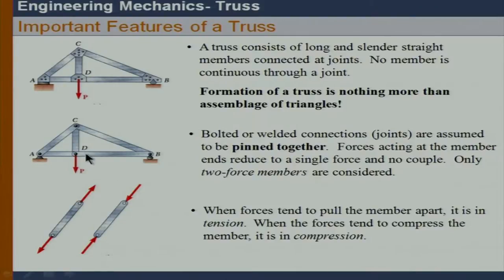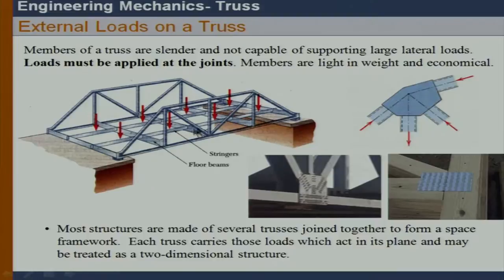Therefore, at the end — that is, at the joint — there is only one force acting: a single force with no couple. We also go through the notation of tension and compression. In the member, if members are actually pulled, we say it is in tension; if pushed, it is in compression. We will never see a truss where members are subject to any kind of lateral load.